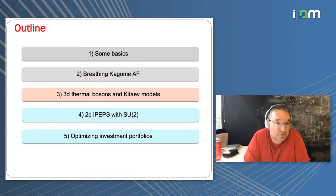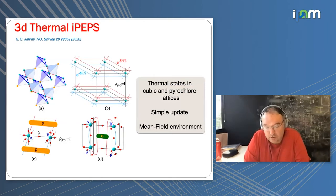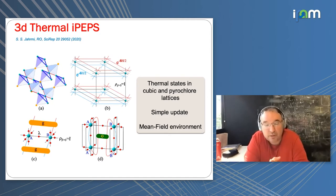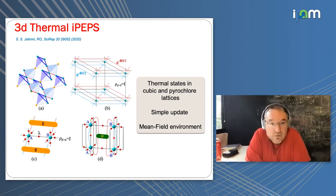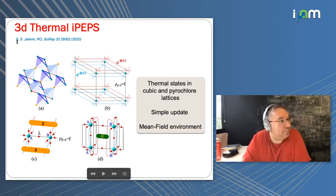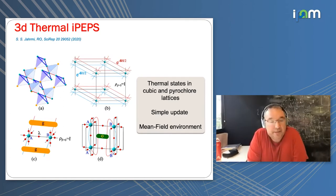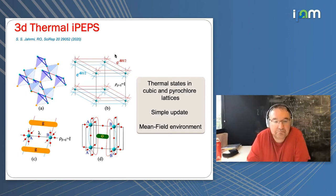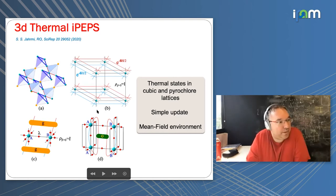Now I'll explain simulations for 3D bosons and Kitaev models at finite temperature. We developed a tensor network algorithm in 3D that works on any lattice by considering a simplification of the environment. It computes finite-temperature thermal states of 3D quantum lattice systems in any geometry. The algorithm is based on simple update with a mean-field environment for expectation values. For details I invite you to look at the paper — this was done with Saïed.